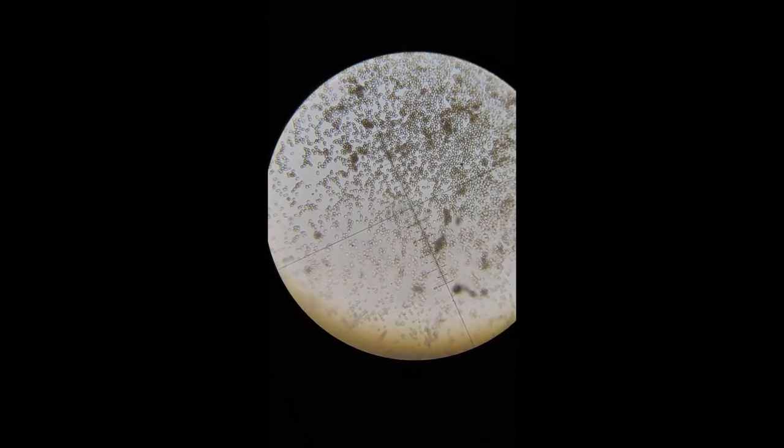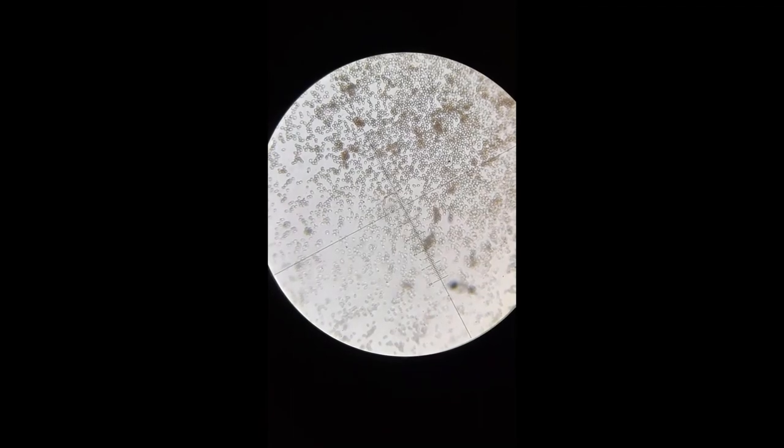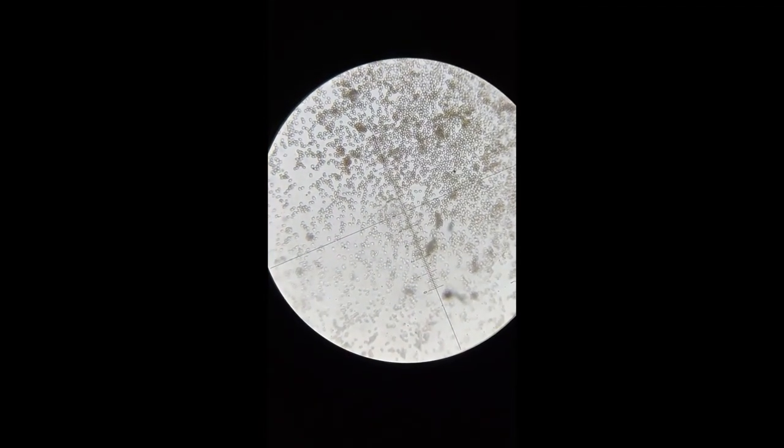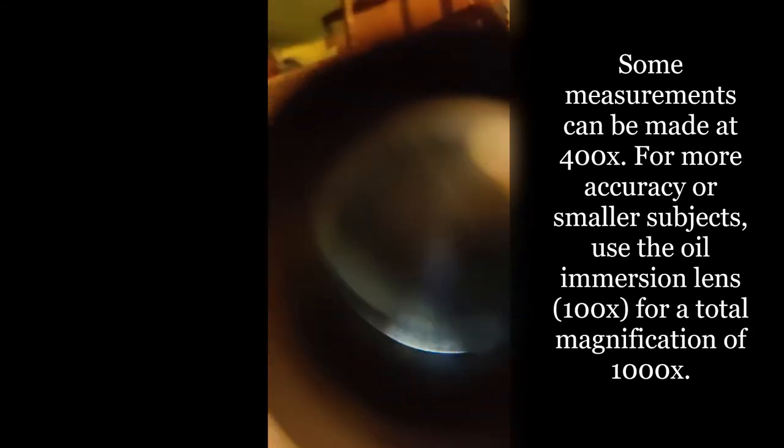So as you can see, they're quite small, and because we're looking at them under 400x that's not a one to one ratio with the little ruler. So I have a cheat sheet here I'm going to show you.